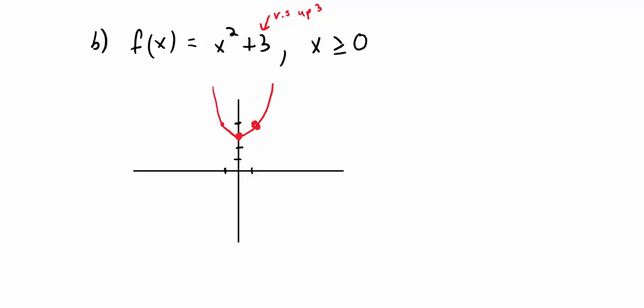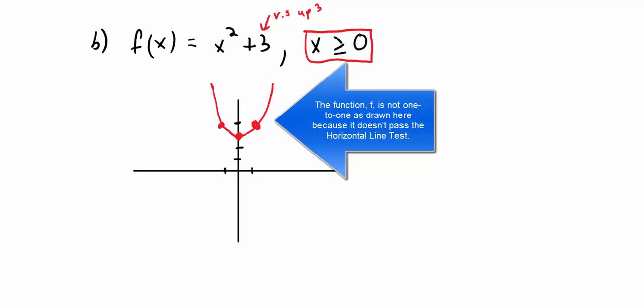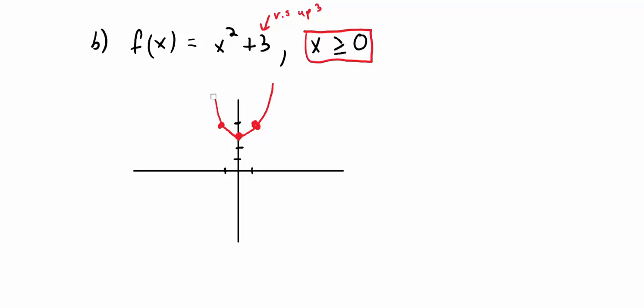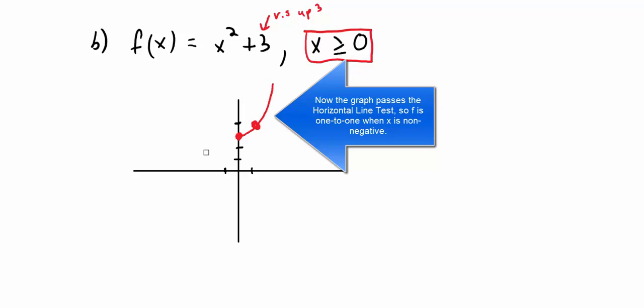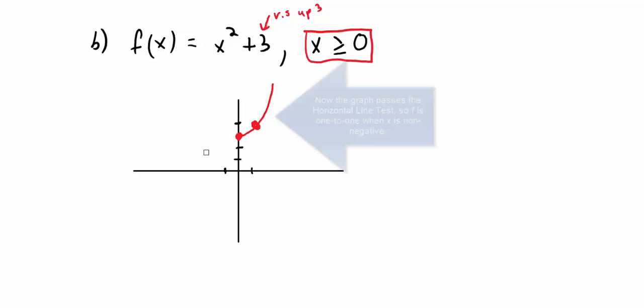However, I've graphed too much — x is only allowed to be greater than or equal to zero. That erases the entire left side of the parabola, which is good because the full parabola is not one-to-one. With only x ≥ 0, the left side is gone, and now it is a one-to-one function.